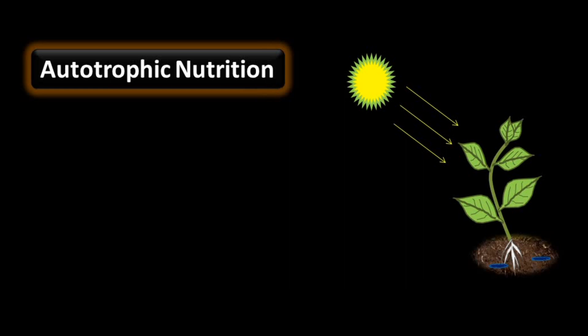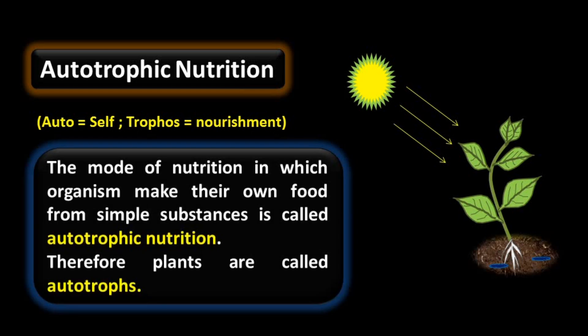Autotrophic mode of nutrition — 'auto' means self, 'trophe' means nourishment, so it means self-nourishment. This plant gets energy from the sun, water and minerals from the soil, and carbon dioxide from the atmosphere. Using these simple substances, plants make their own food. The mode of nutrition in which organisms make their own food from simple substances is called autotrophic nutrition. Plants make their own food, so plants are called autotrophs.